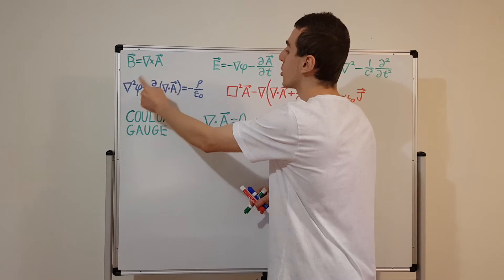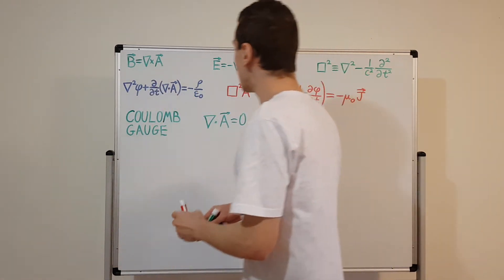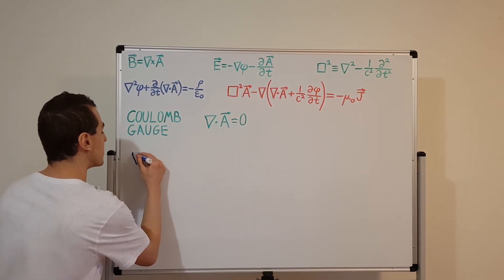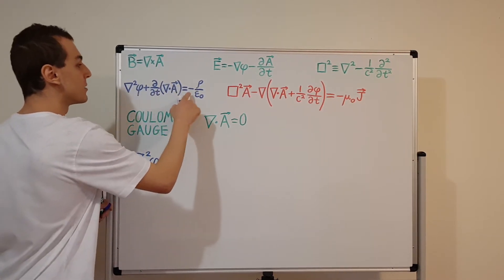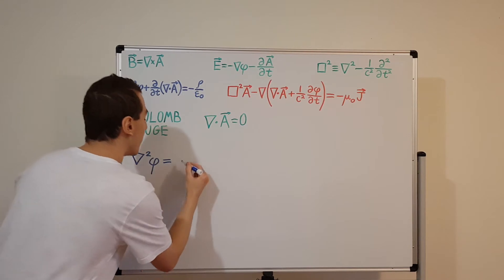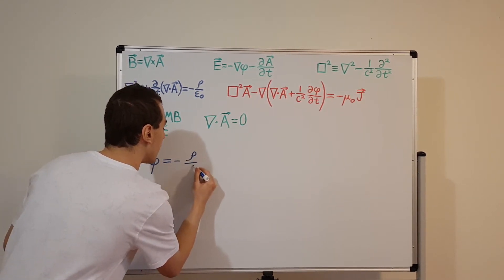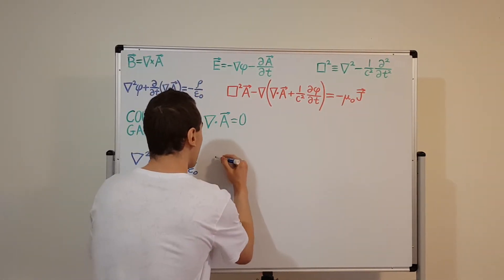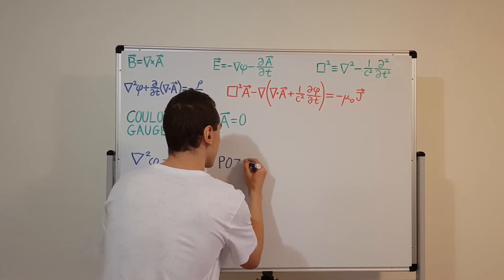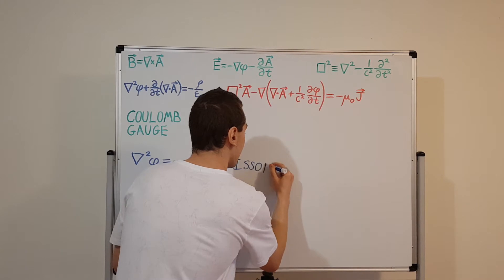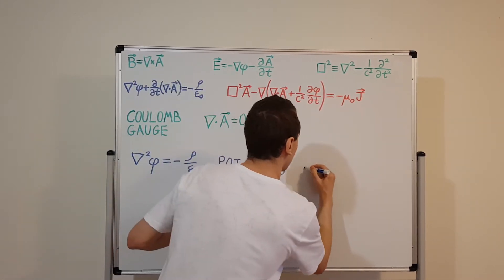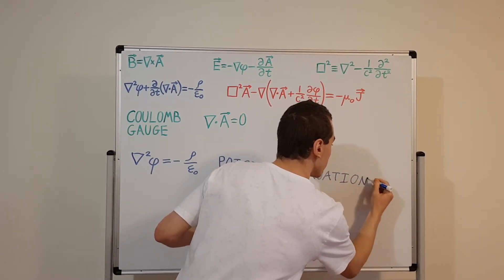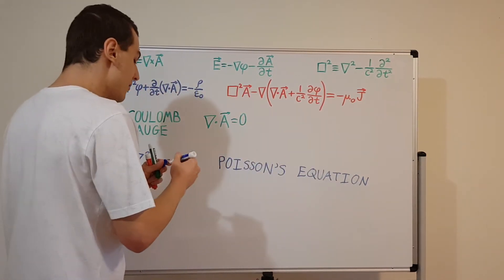With the divergence of A set to zero, that term disappears, and the partial time derivative of zero is also zero. So what happens to the blue equation? We get the Laplacian operator acting on phi, and the other term disappears, leaving us with minus rho over epsilon naught. This is actually Poisson's equation — and it is quite easy to solve, much easier than the full expression.